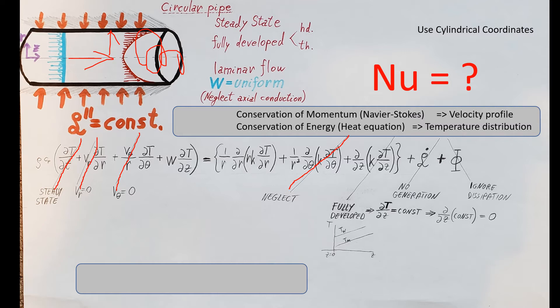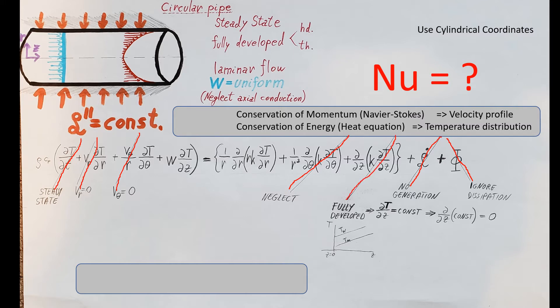Just a heads up in case you forgot: these are the convection terms and these are the conduction terms. Let's see what else we can cross out. We do not deal with any kind of generation, so cross that out. We're going to ignore dissipation — if they want us to consider it they usually tell us, and it's a very small term anyway. The final term we can cross out is this one, due to fully developed conditions.